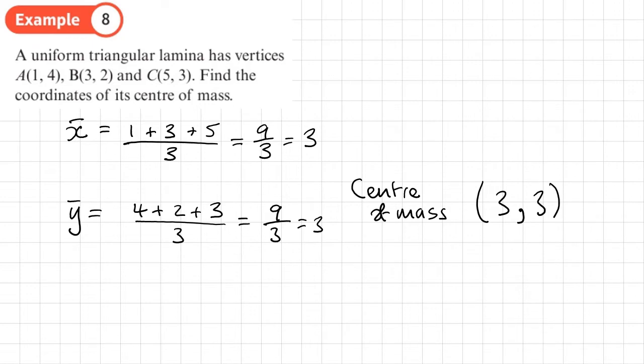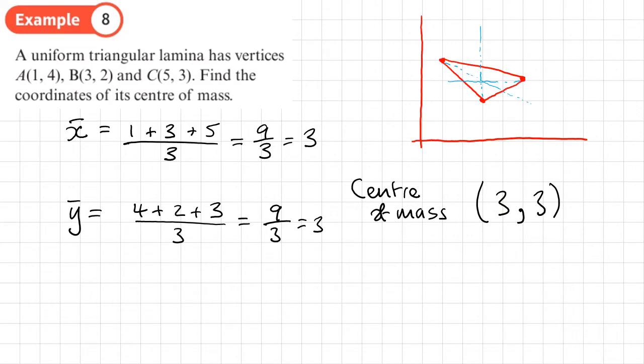If we were to draw this triangle out and draw in the medians, we would find that's where the centroid is — at the point (3, 3). Here's a little diagram just to confirm that.